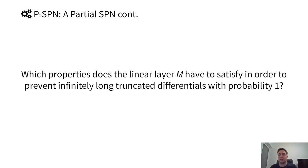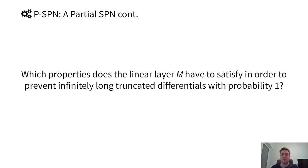The question we try to answer in this work is: which properties does the linear layer M have to satisfy in order to prevent infinity-long truncated differentials with probability 1? These are actually related to subspace trails, as we'll see in a minute.